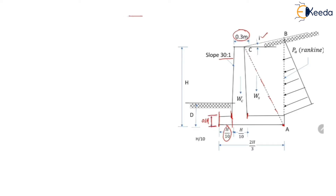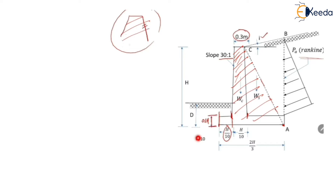As we have seen in Rankine's earth pressure theory, the shape of the retaining wall was considered accordingly. Line AC represents the back of the retaining wall in Rankine's earth pressure theory, and this line AC should not be obstructed by the stem. This entire portion will then resemble the cross-section of the retaining wall in Rankine's theory. The angle made by line AC with the horizontal is alpha, while the angle made by the back of the retaining wall in Rankine's theory with the horizontal was also alpha. The angle made by line AC with the vertical is eta.